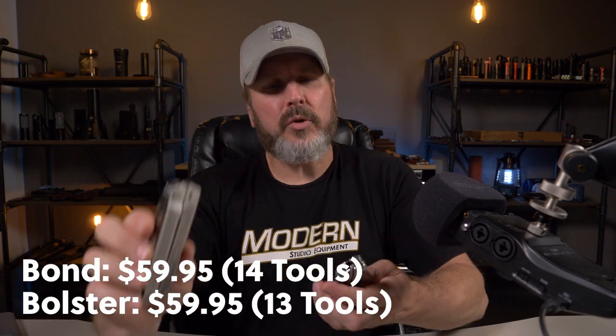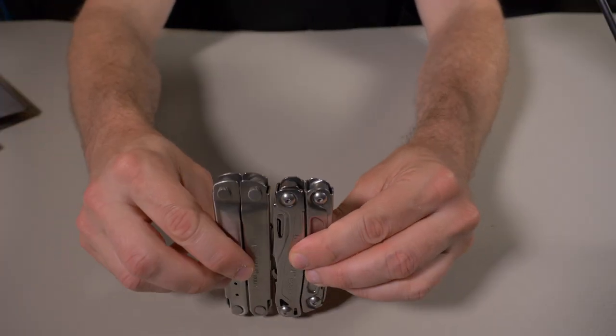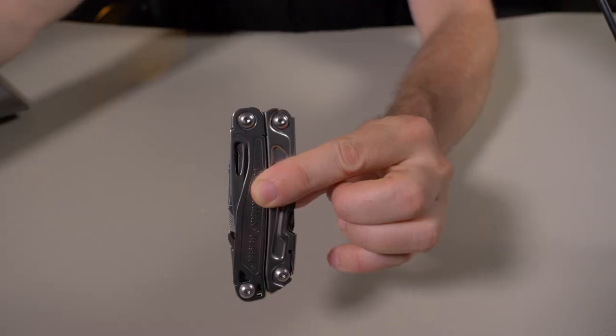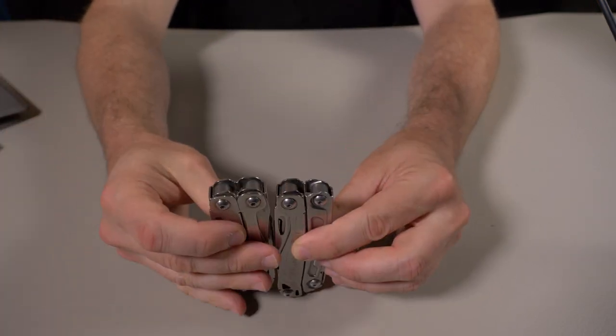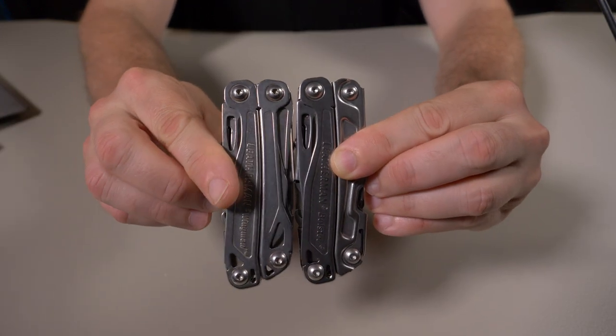Keep in mind the Leatherman Bond gives you 14 tools, the Bolster gives you 13 tools. You can also compare it to the Leatherman Rev and the Wingman here, but basically it's a Sidekick with no saw priced exactly the same as the Leatherman Bond. In size comparison to the Bond, the Bond is just slightly longer, and compared to the Wingman it's almost the exact same length.